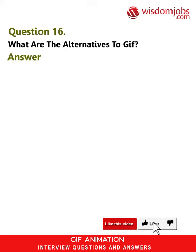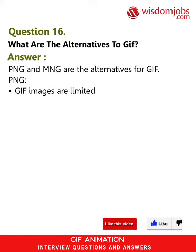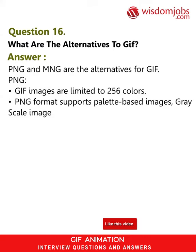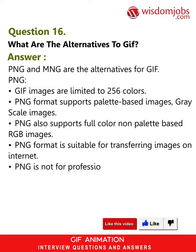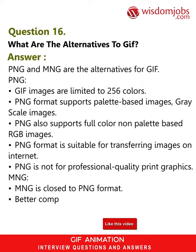Question 16: What are the alternatives to GIF? Answer: PNG and MNG are the alternatives for GIF. PNG — GIF images are limited to 256 colors, whereas PNG format supports palette-based images and grayscale images. PNG also supports full-color non-palette-based RGB images. PNG format is suitable for transferring images on the internet but is not for professional quality print graphics.